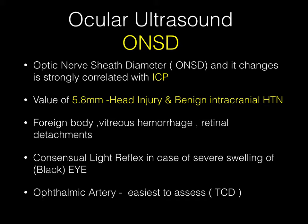The ophthalmic artery is an intracranial structure which can be seen through ocular ultrasound. The pulse wave velocity we get from the ophthalmic artery comes directly from an intracerebral structure. So simply, ophthalmic artery blood flow pattern can give a fair idea about what is happening inside the brain.